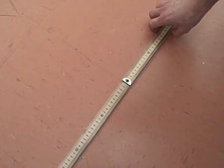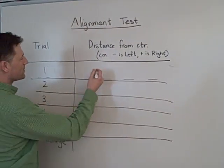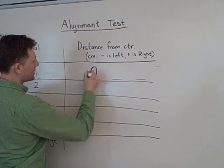Then you come over to your data table. Here I laid it out with trials and the distance from center. So my first trial was actually a zero.